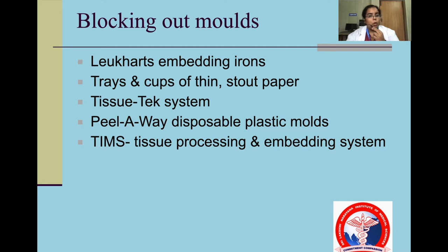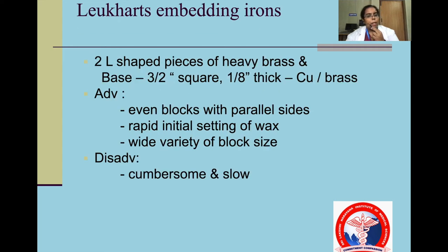Blocking out molds are metal or plastic molds that help to get the shape of the paraffin block. These include Lucard's embedding iron, trays and cups of thin stout paper, tissue tech system, peel away system, and tissue processing and embedding system. Lucard's embedding iron consists of two L-shaped blocks of heavy brass used to level the blocks with parallel sides, giving rapid initial setting of wax and a wide variety of block sizes, though it is cumbersome and slow.